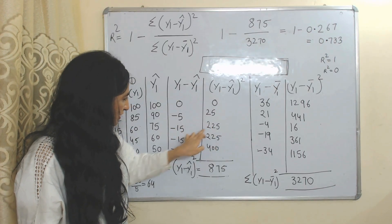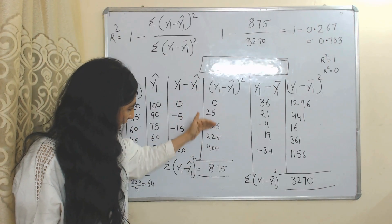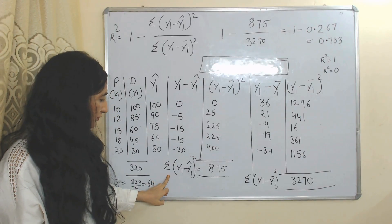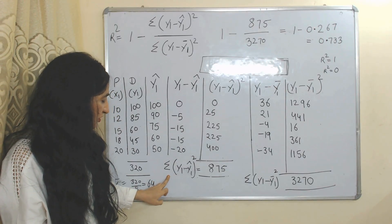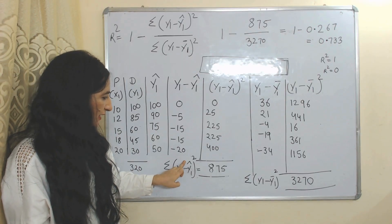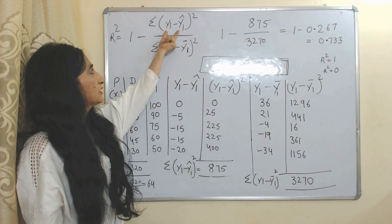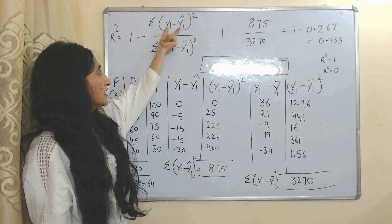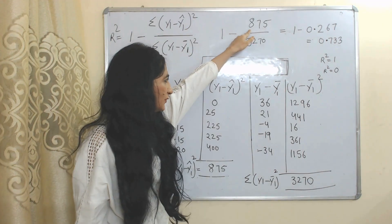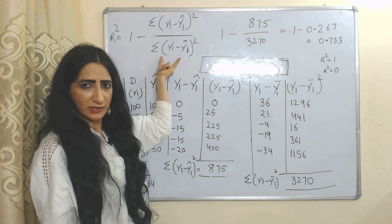We square each residual: 25, 225, 225, 400. Now we add all these values. It becomes equal to the summation of the square of (Y1 minus Y1-hat). That is our SSR value, which we place into the formula.